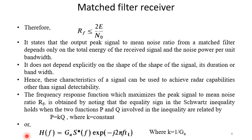The frequency response function which maximizes the peak signal to mean noise ratio R_f is obtained by noting that the equality sign of the Schwarz inequality holds when the two functions P and Q involved in the inequality are related